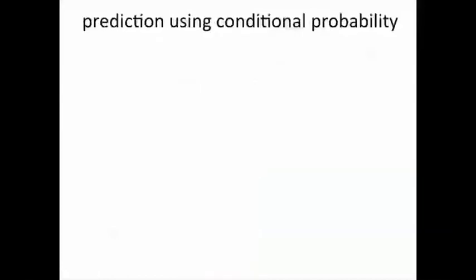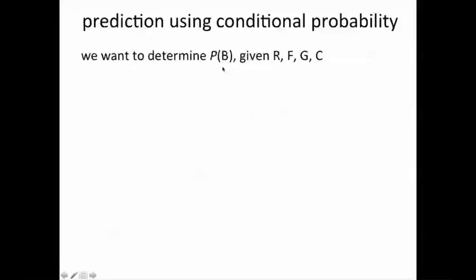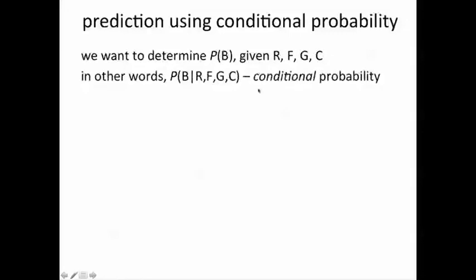In the language of probability theory, what we really want to figure out is the probability of a buy action given values, yes or no, for whether or not the words red, flower, gift, and cheap are present or absent in the query. In other words, we're trying to find the conditional probability of a buy given the values of these four random variables.